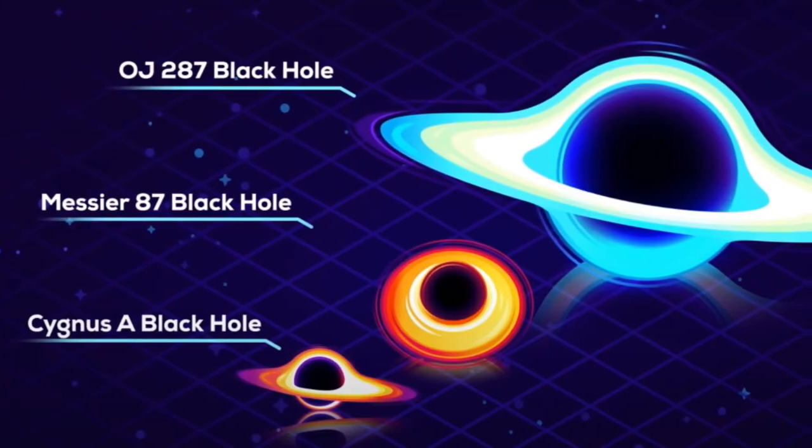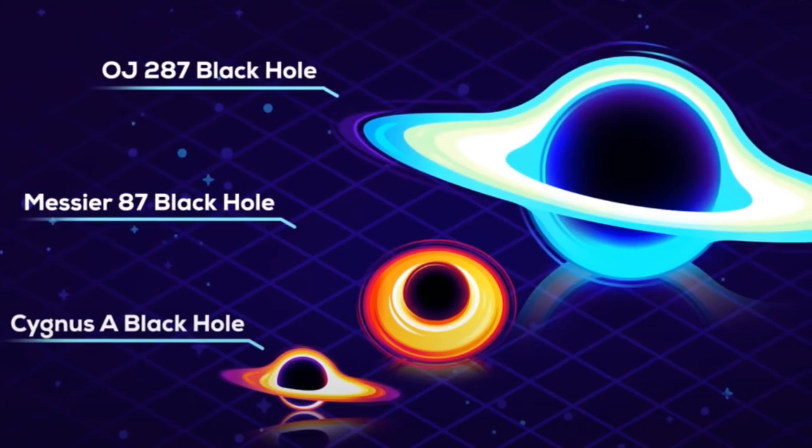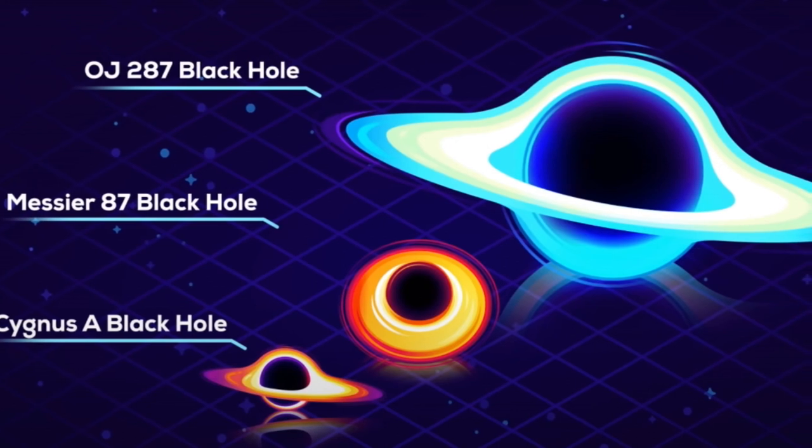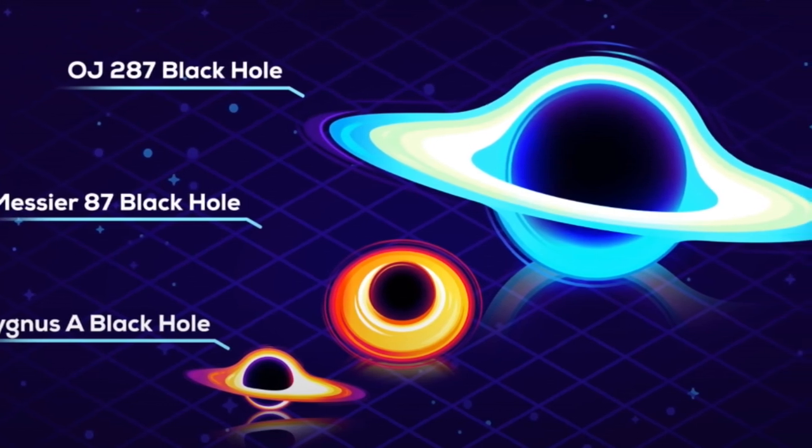Black holes come in different sizes, from small ones that are only a few miles across to supermassive ones that are billions of times more massive than the Sun.